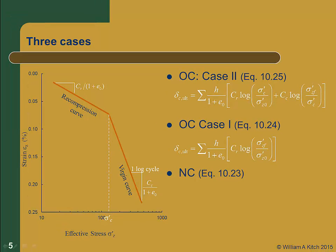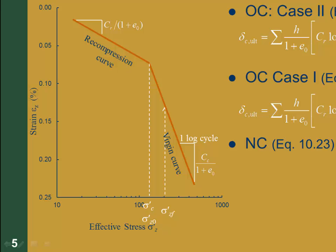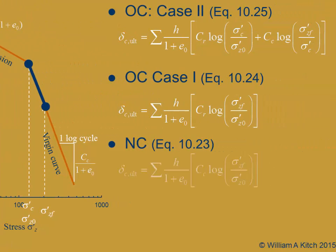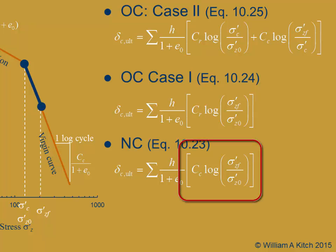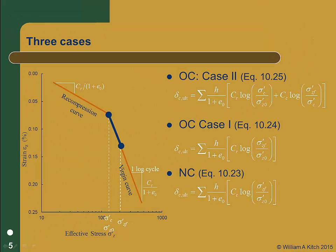The final case is the normally consolidated case. In this case, sigma prime naught is equal to sigma prime c, and the soil loads along the virgin curve from sigma prime naught to sigma prime zf. Our equation for consolidation settlement will have only a virgin curve term, including the log of sigma prime zf over sigma prime naught. This is equation 10-23 in your text. Really, case OC2 is the general case with both recompression and virgin curve terms, and cases OC1 and NC are simplifications with only one term each. Be careful to put the right stresses in the right places in your equations, or you'll miss that question on your midterm.